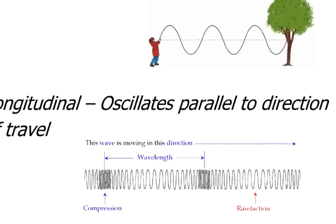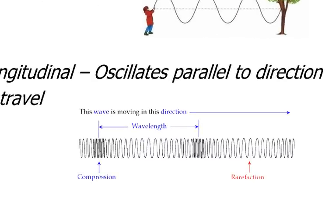In the case of a slinky, if somebody sits over here on the floor and pushes the slinky back and forth like that towards their body, away from their body, towards their body, away from their body, then the wave travels this direction and it also oscillates that direction. So it's oscillating parallel the same way that it's traveling, the same direction that it's traveling.